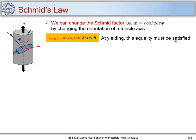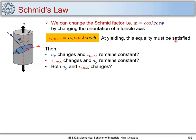This raises three questions: when we change cos(phi) and cos(lambda), is it sigma_y that changes while tau_CRSS remains constant? Or is tau_CRSS changing while sigma_y remains constant? Or are both changing? These are the three situations arising from this relation — which one is actually changing?